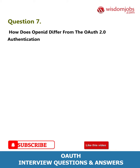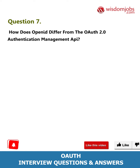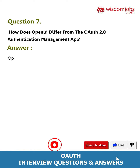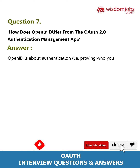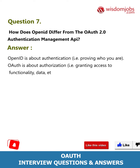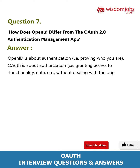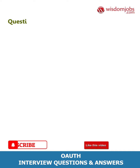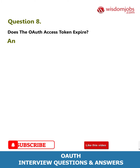Question 7: How does OpenID differ from the OAuth 2.0 authentication management API? Answer: OpenID is about authentication, i.e., proving who you are. OAuth is about authorization, i.e., granting access to functionality, data, etc., without dealing with the original authentication.